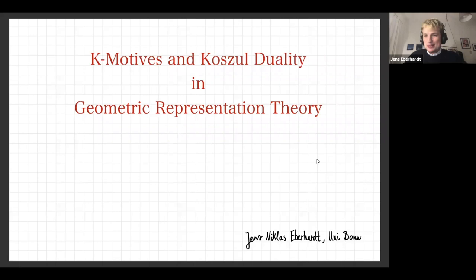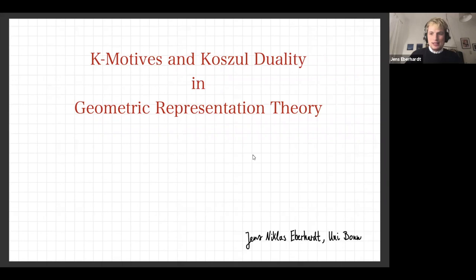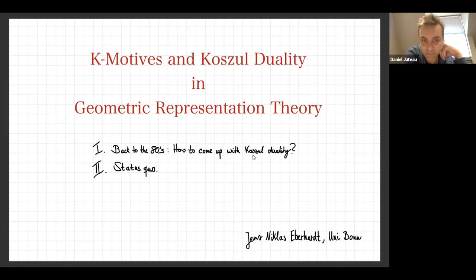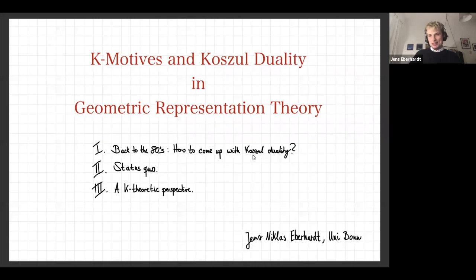I always had the question: how can someone come up with this thing? At the beginning of my talk I want to do some examples and try to put ourselves in the shoes of someone who lives in the 1980s and gets the first hints of Koszul duality, develop the story from there, then talk about the status quo and big statements in geometric representation theory, and finally develop this new K-theoretic perspective.